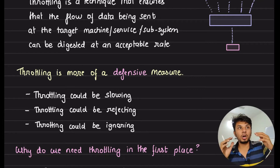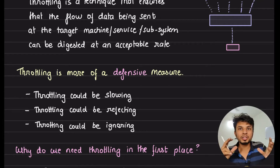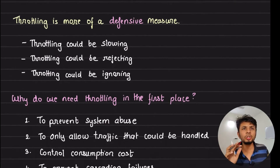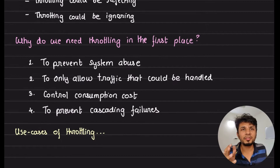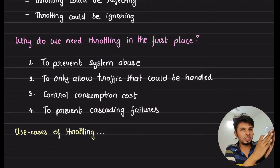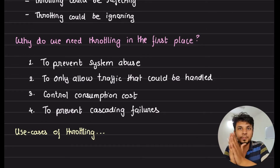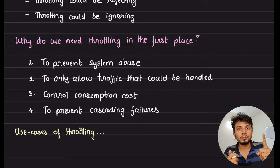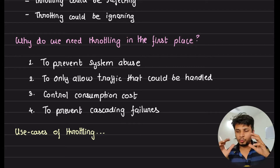It is always a combination of these three strategies that you apply depending on the kind of endpoints you have — it's not always one over the other. So why do we even need throttling in the first place? The first reason is to prevent system abuse. A user might go rogue and make as many API calls as possible to bring your system down.